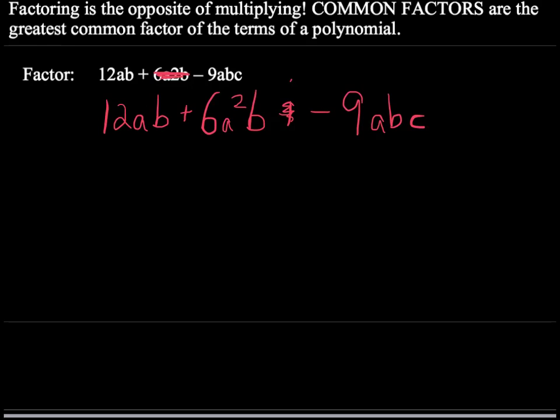Okay, welcome back. Here we go. The common factors here are 3 times a times b. So all three of the terms are divisible by 3ab. So if I take the first term 12ab and divide by 3ab, I get 4. If I take the second term 6a squared b and divide by 3ab, I get 2a.